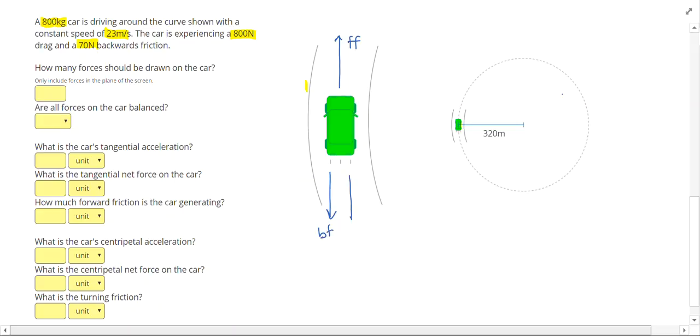So in this problem, I have the top view of my car. So I'm going to draw a forward friction to the north, backwards friction and drag both acting backwards to the south. Since the car is making a right turn right here, I know I need a force towards the center of the circle. And again, that's going to be turning friction.